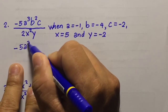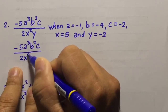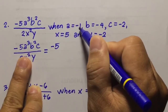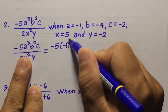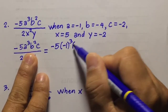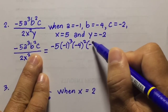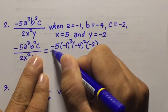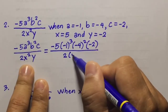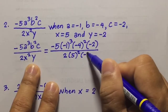Negative 5a cubed b squared c over 2x squared y. This will be equal to negative 5 times — a is negative 1, so we have negative 1 cubed — then b squared where b is negative 4, then c times negative 2, over 2, then x is 5 so we have 5 squared, and y is negative 2 so we have times negative 2.